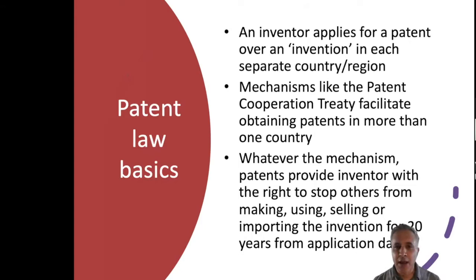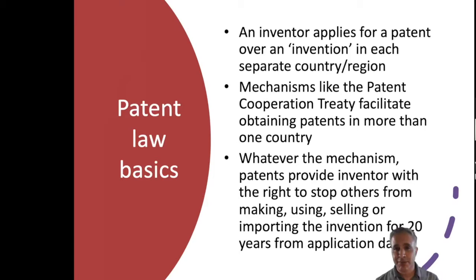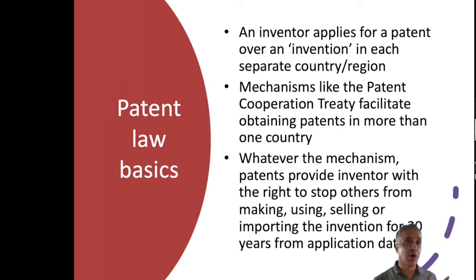I'm going to take you quickly into patent law, which is my area of study. Patent law applies to things called inventions. An inventor applies for it — you don't get it automatically, you have to ask for it — and you do it on a jurisdiction-by-jurisdiction basis. If you want a Canadian patent, you apply in Canada, but it's no good in the United States. And if you get an American patent, it's no good here.